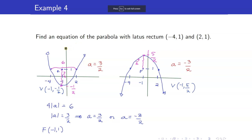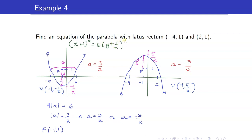Which variable will be squared in our equation? It's going to be x. So we have x minus h, that's x plus 1 squared equals 4 times 3 halves, that's 6 times y plus 1 half. For this parabola, we have x plus 1 squared equals negative 6 times y minus 5 halves.